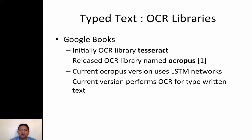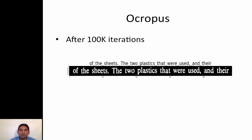Both Tesseract and OCR Opus were used by the Google Books project, which aimed to scan books and newspapers and upload them online. OCR Opus uses recurrent neural networks. After training it for a hundred thousand iterations, we can see that it starts doing a pretty good job of recognizing text in images.